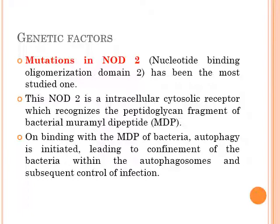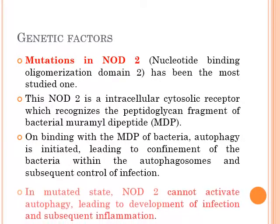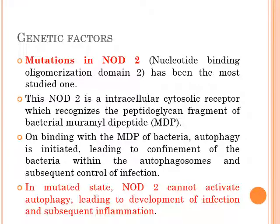Normally, bacterial muramyl dipeptide is recognized by NOD2, which initiates autophagy leading to confinement of bacteria within autophagosomes and control of infection. But in patients susceptible to IBD, there are mutations in NOD2. In the mutated state, NOD2 cannot activate autophagy, leading to development of infection and subsequent inflammation.